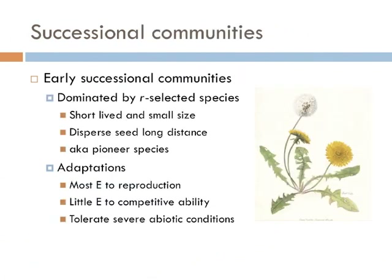Following a very severe disturbance, succession of plant species typically follows a specific pattern. The first plants to reach a new environment are known ecologically as r-selected species, also called pioneer species. They're typically the first to reach a newly disturbed environment because they have the ability to disperse their seeds long distances. They're also typically small in size and short-lived, put most of their energy into reproduction, are poor competitors, but can tolerate severe abiotic conditions like poor soil quality. In other words, pioneer species live fast and die young — they are the rock stars of the plant world.